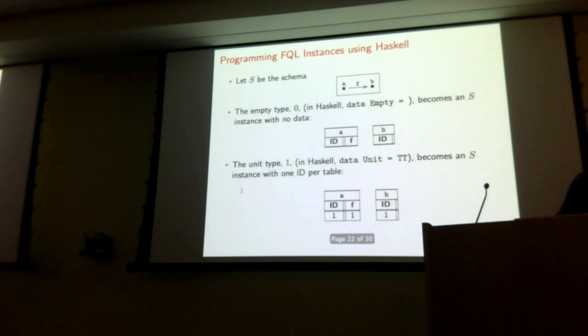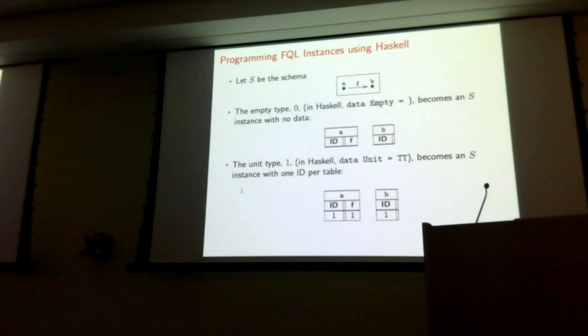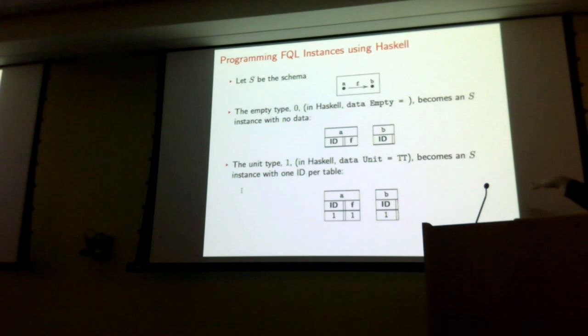Here's the schema we're going to use for the last part: one node A, one node B, and a foreign key F between them. What do we do? Let's start with the empty type. As before in Haskell, this is a type with no constructors. I'm going to give you an instance on S that has no data — that's what that looks like. For the unit type, I'm going to give you an instance that has one row in every table, and the foreign keys are filled in the only possible way they can be.